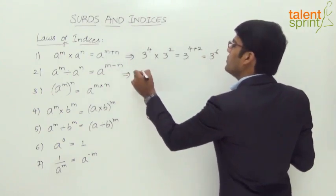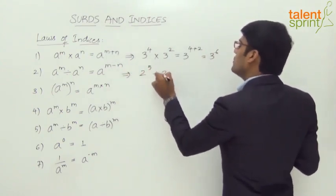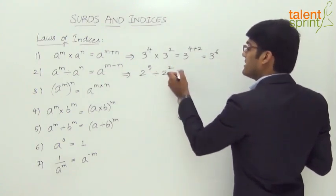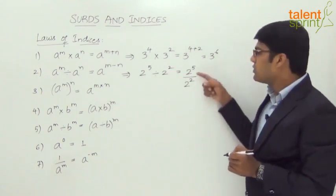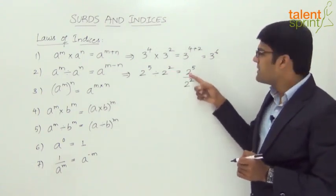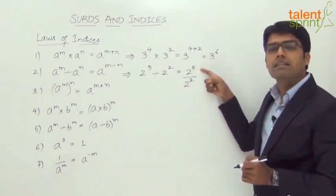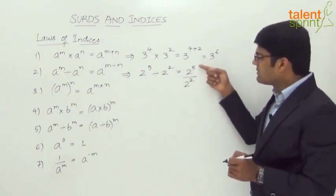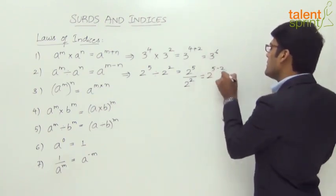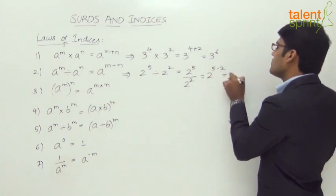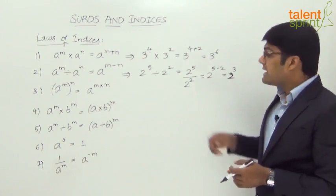For example, 2 to the power of 5 divided by 2 to the power of 2. The bases are equal and are being divided, so the powers must be subtracted — 5 minus 2. This gives 2 to the power of 3, and 2 to the power of 3 equals 8.